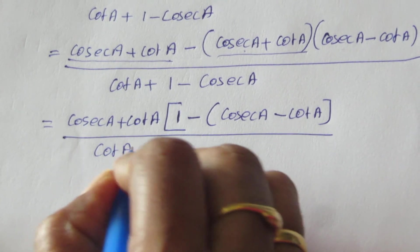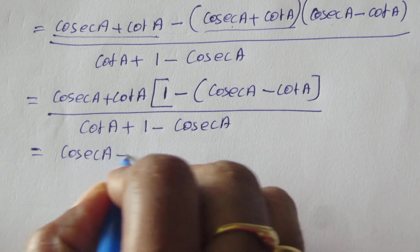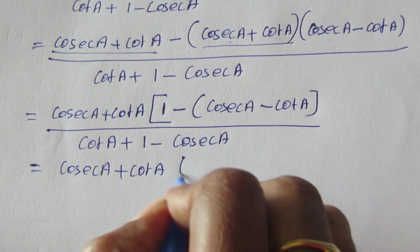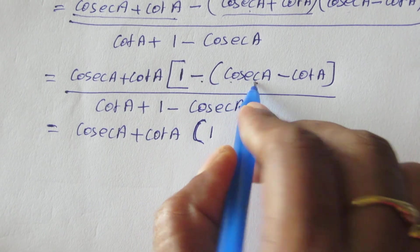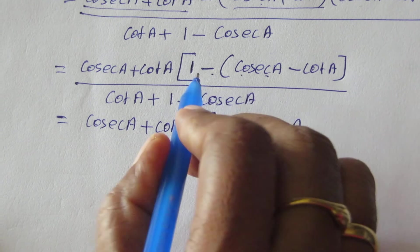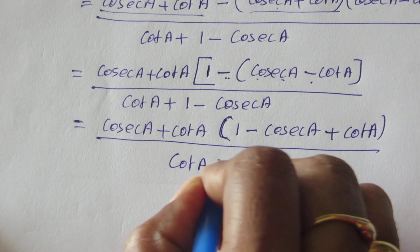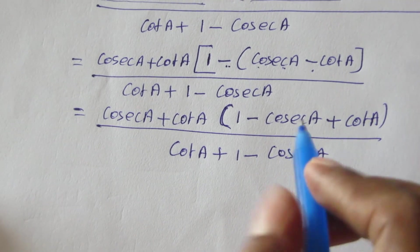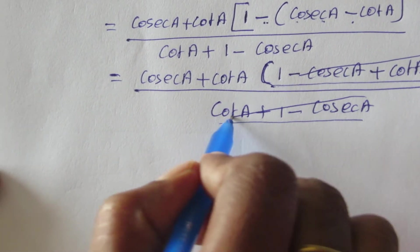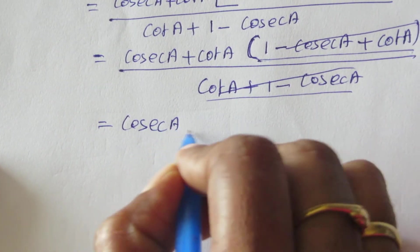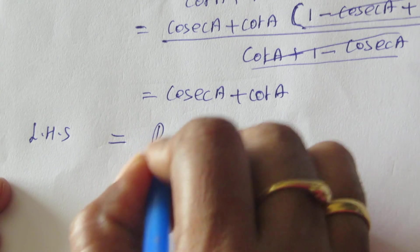Divided by cot a plus 1 minus cosec a. Now cosec a plus cot a is factored out. Inside the bracket we have 1 minus cosec a minus cot a, which equals cot a plus 1 minus cosec a. You can see the denominator and this term in the numerator are equal, so we can cancel both. The remaining result is cosec a plus cot a.